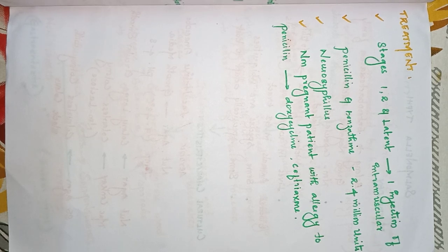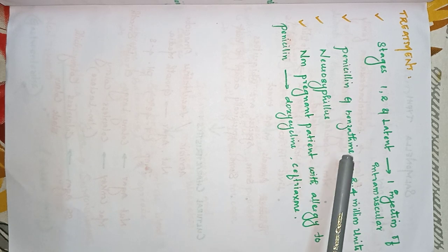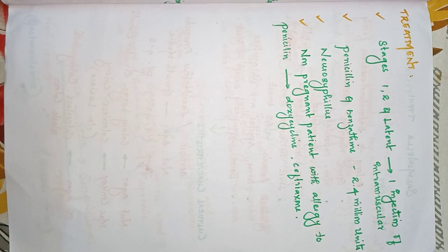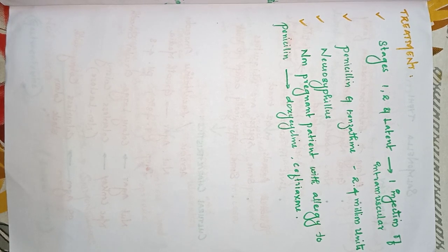For treatment in stages one, two, and the latent period, a single intramuscular injection of benzathine penicillin is given in two to four million units. For neurosyphilis and in non-pregnant women allergic to penicillin, doxycycline or ceftriaxone are used as alternatives. Prevention includes maintaining good hygiene, limiting sex partners, and using condoms.